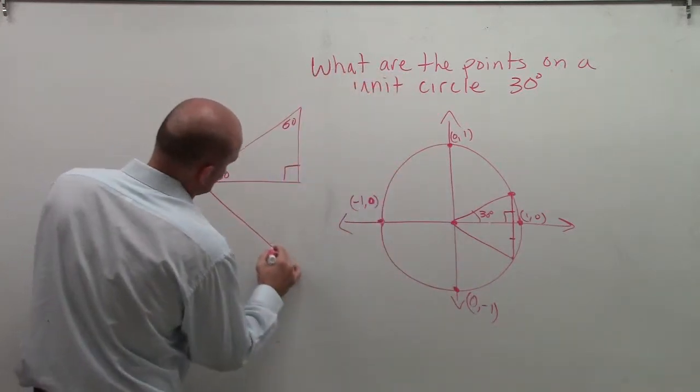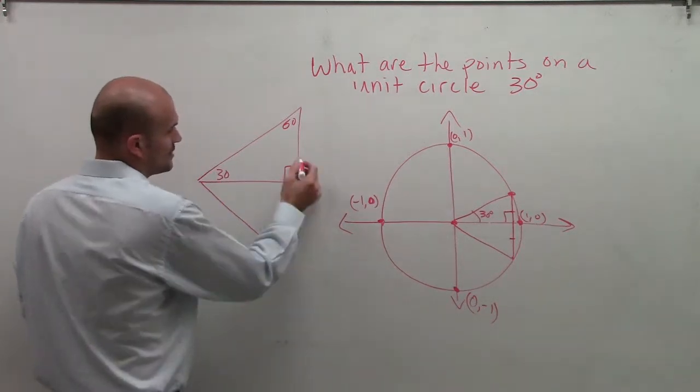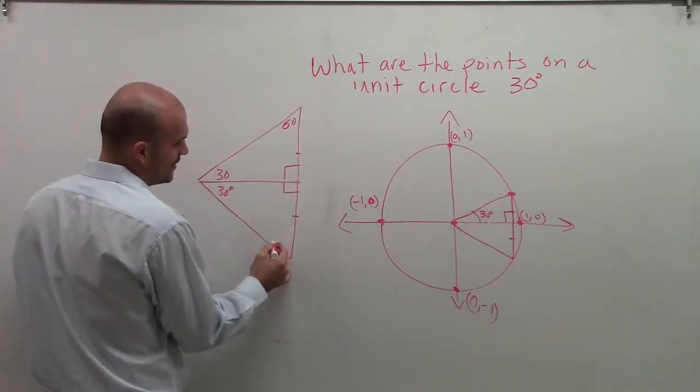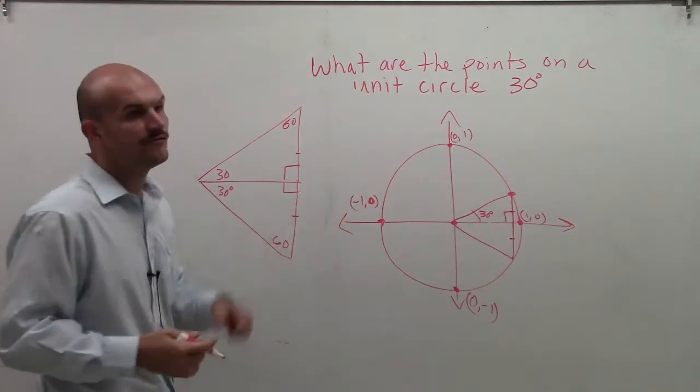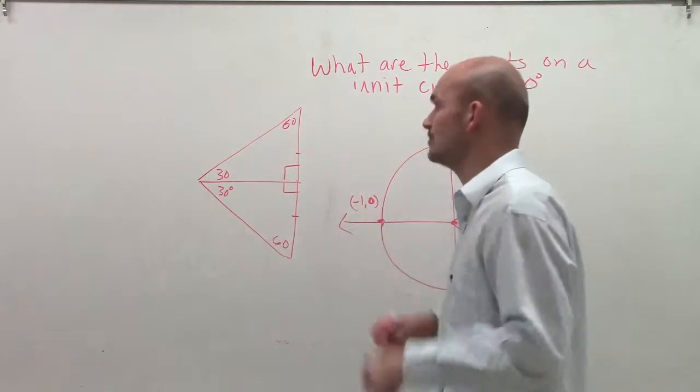Therefore, what I'm actually going to create is a 60-60-60 triangle, all right? So therefore, if I could say these two were the same, that would be 30 degrees down, and then that would be 60 degrees. Therefore, now what I've just created is an equilateral triangle. And I'll kind of explain a little bit why I'm doing that as well.